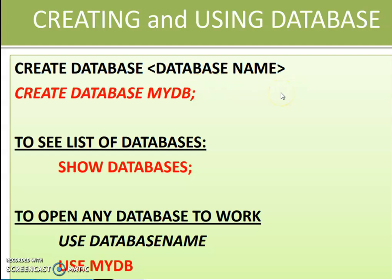How can we see the list of databases? We can use SHOW DATABASES to identify the list of databases. Then, we have to work in that particular database. For that we use the syntax: USE database_name. For example, USE mydb. Now I can work in this mydb database. This is the first statement for creating a database and then using that database.